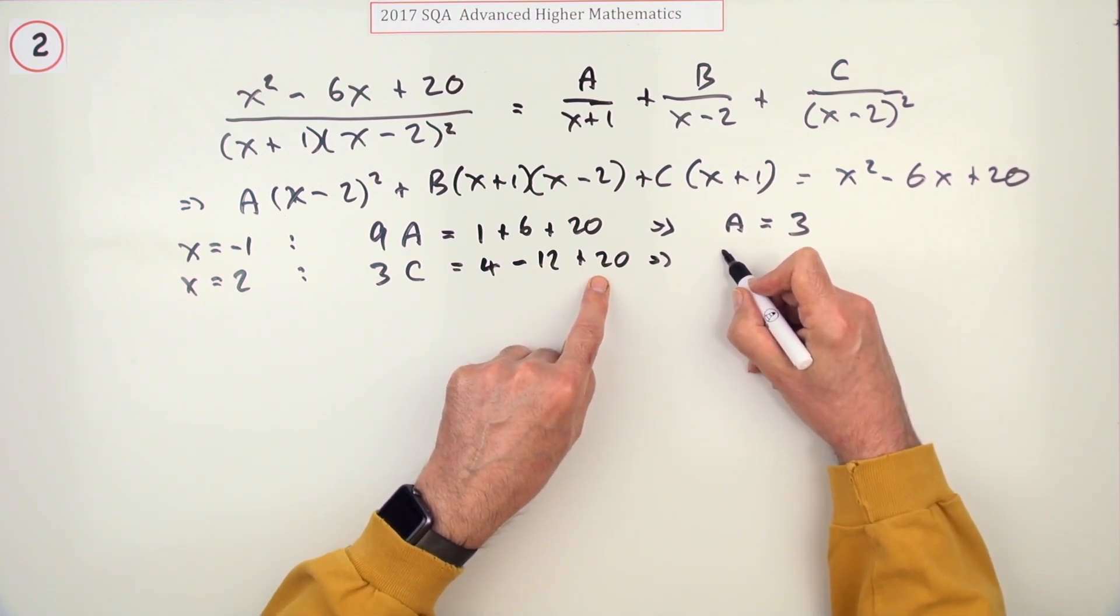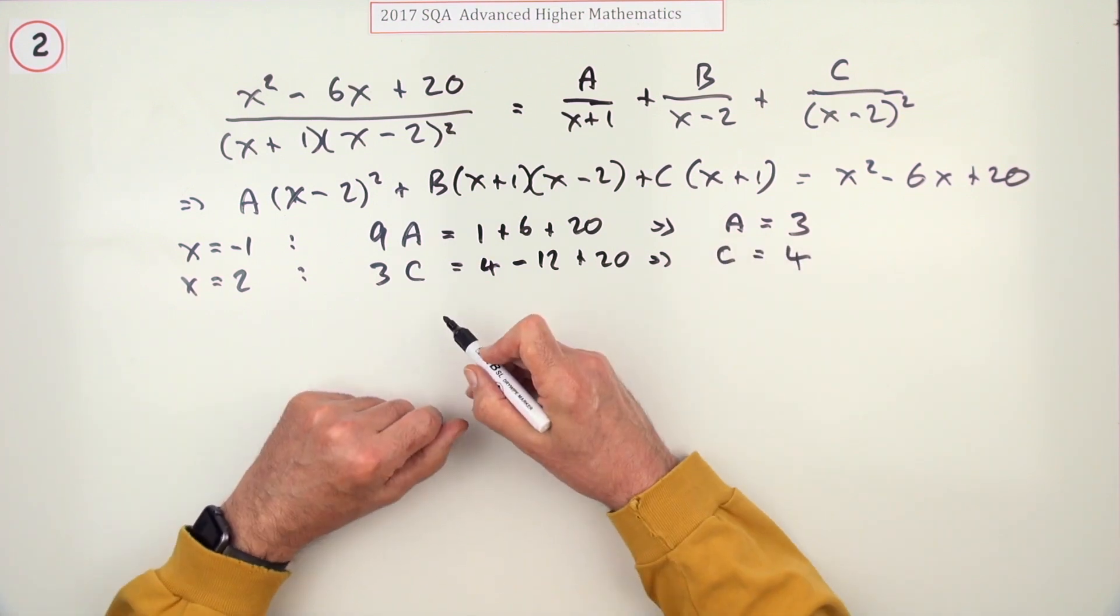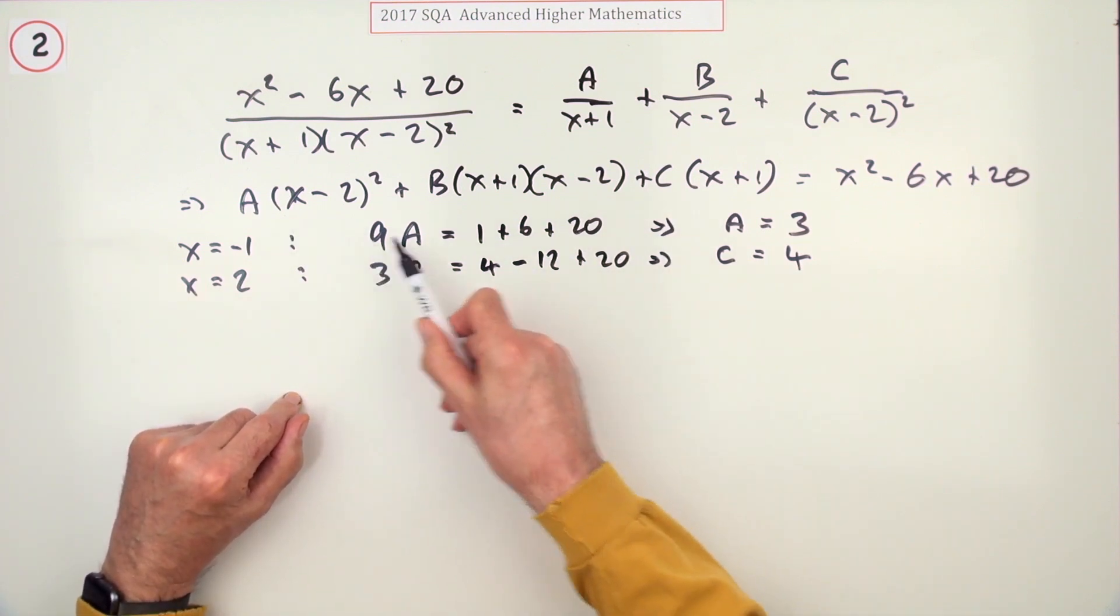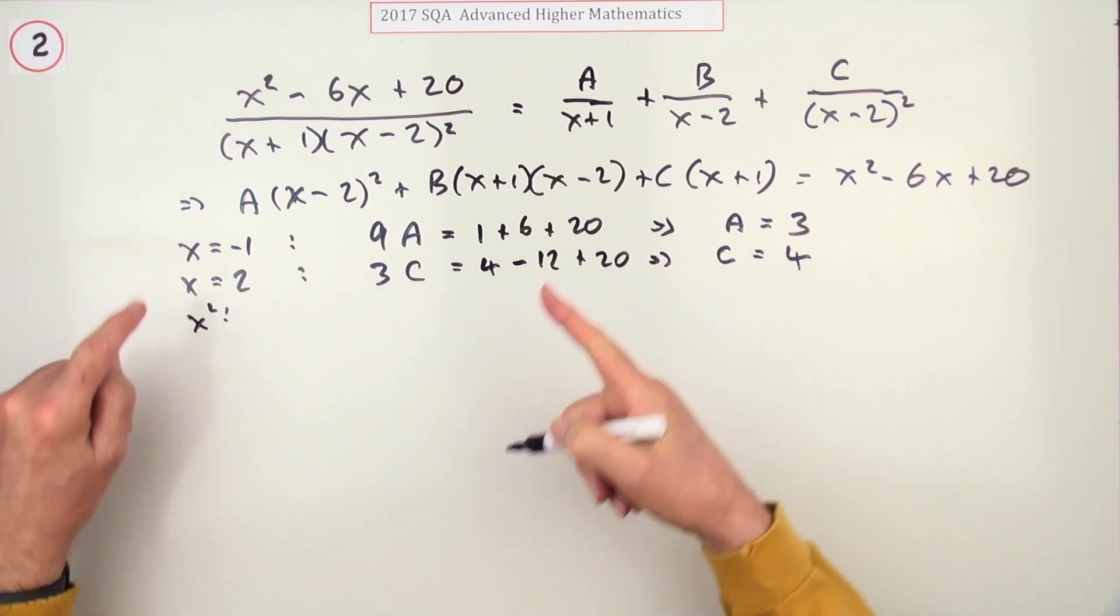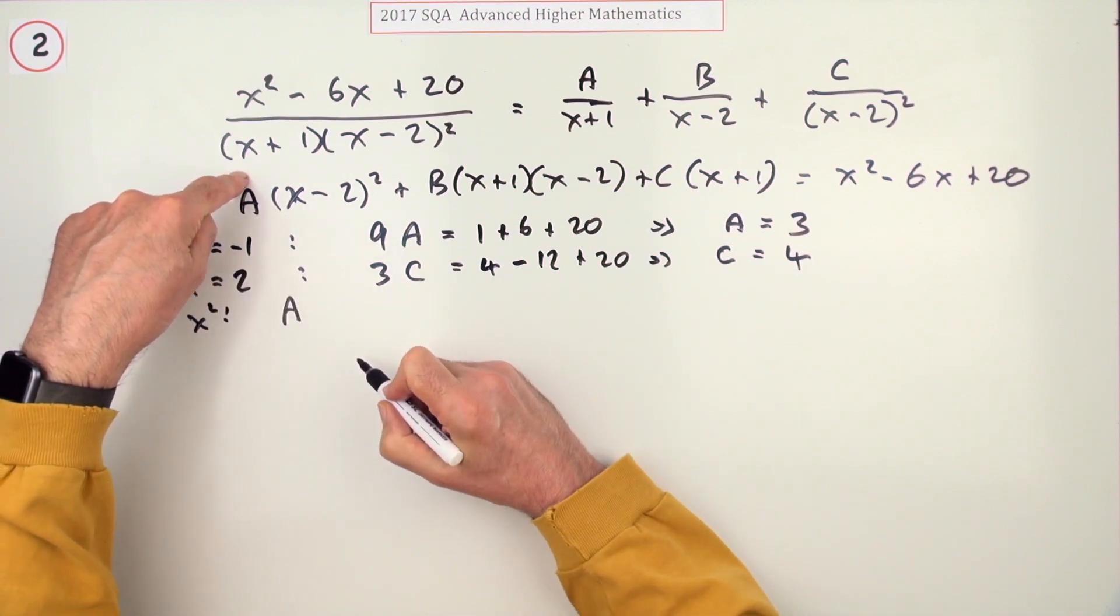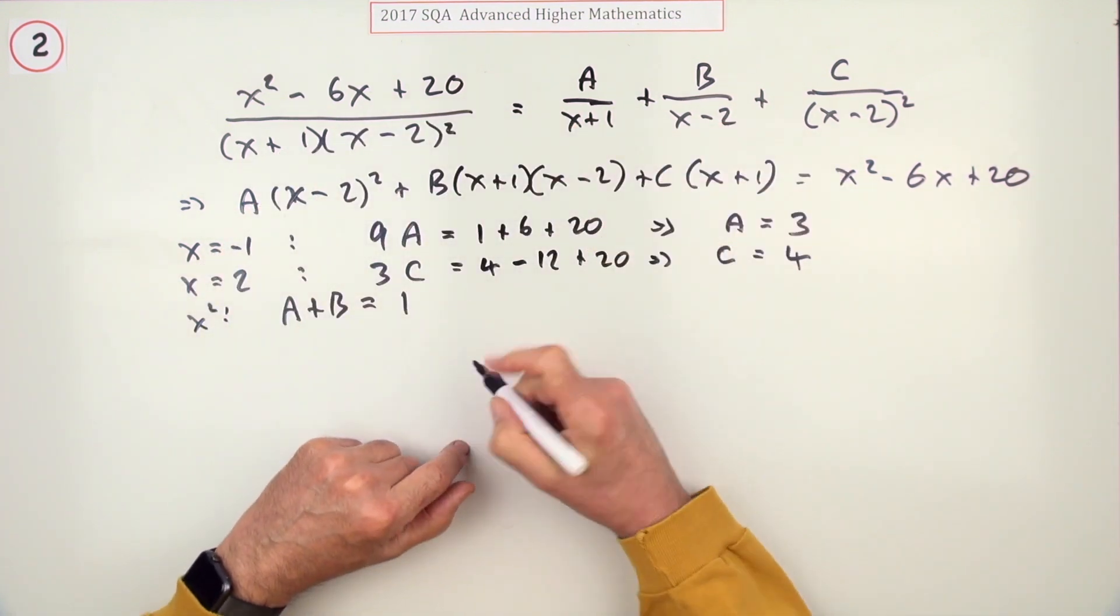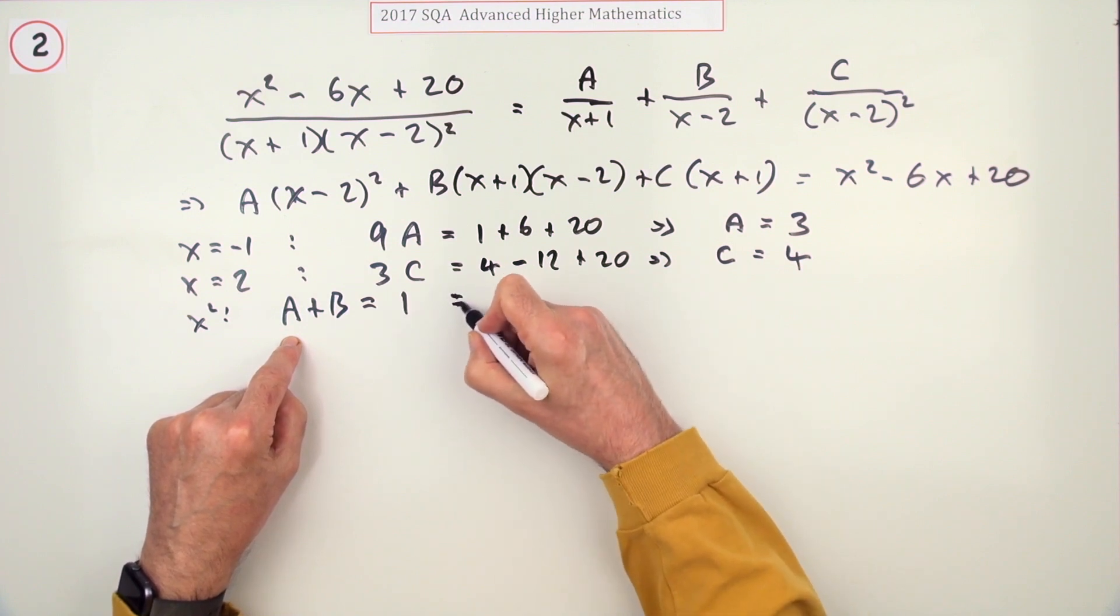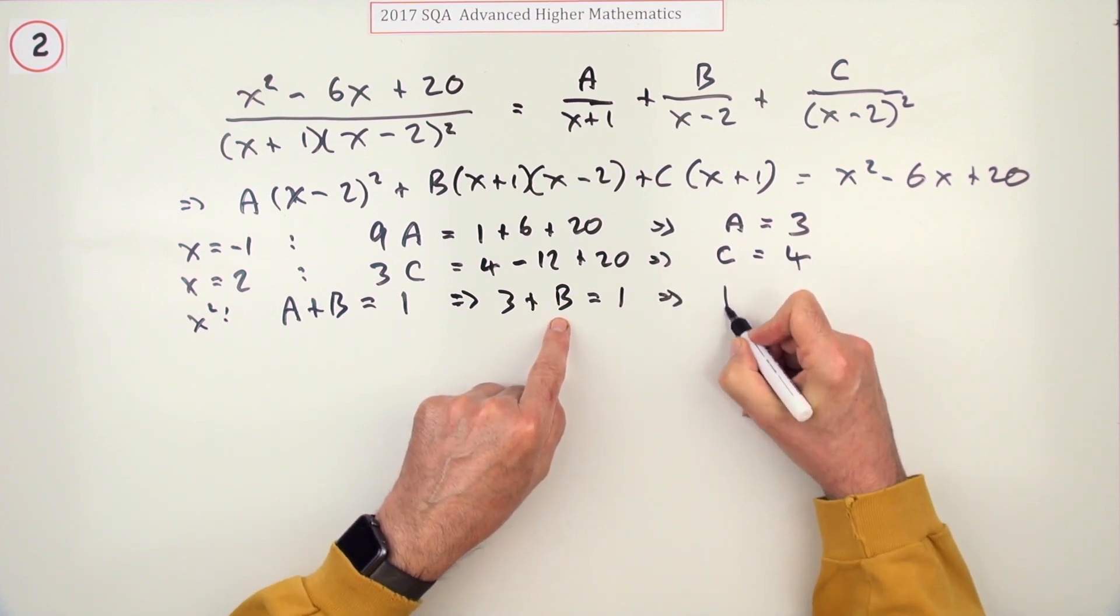For the last one, I'm not going to pick a number. I'm just going to examine what I've got here and compare the x² terms, because on this side the only way of getting x² would be A lots of x² here and B lots of x² here to make 1 lot of x² there. You already know that A is 3, so 3 + B = 1. That means B must be -2.